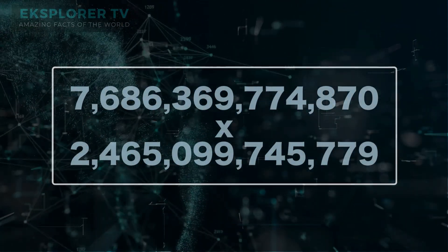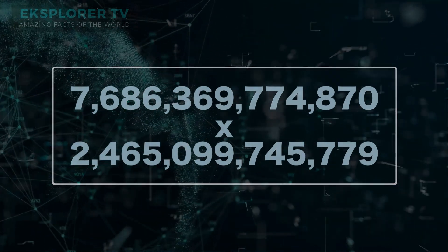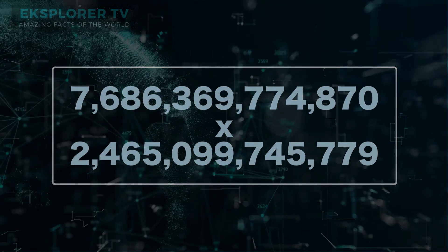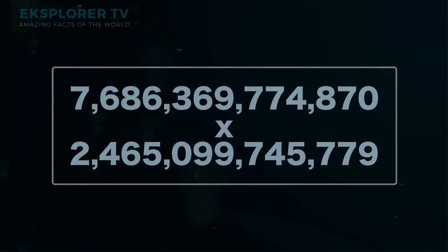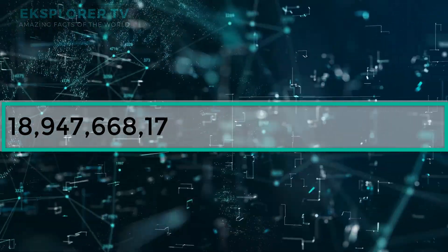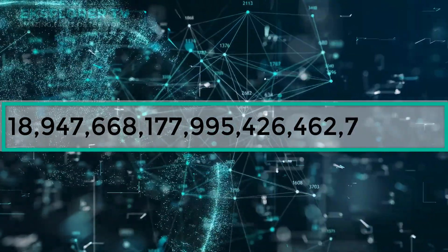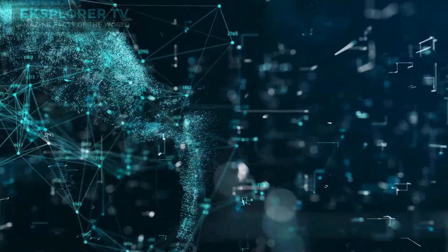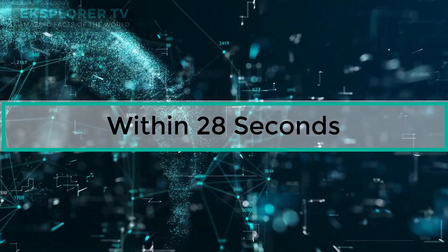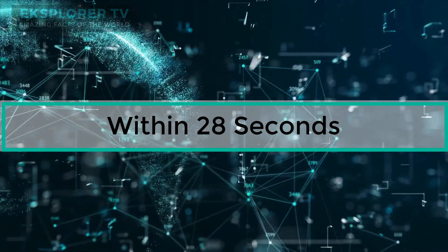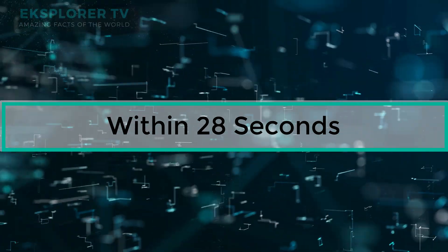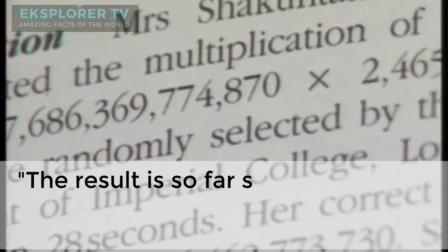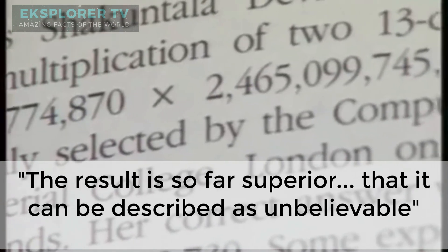Ang isa pang kahangahangang pangyayari ay naganap noong 1977 sa Southern Methodist University. Binigyan niya ng sagot ang 23rd root ng isang 201-digit number sa loob lang ng 50 seconds. Ang kanyang sagot ay 546,372,891, at nakumpirma ito sa pamamagitan ng mga kalkulasyon na ginawa sa US Bureau of Standards ng UNIVAC 1101 computer, na kung saan ang isang espesyal na program ay kailangan isulat upang maisagawa ang malaking pagkalkula. Noong June 18, 1980, ipinamalas niya ang kakayahan sa pagmultiply sa dalawang 13-digit number. Ang mga numerong ito ay random pick ng Department of Computing sa Imperial College of London, at sa loob lang ng 28 seconds niya ito sinagutan gamit ang mental arithmetic. Ang event na ito ay na-record sa 1982 Guinness Book of Records. Sinabi ng writer na si Stephen Smith: 'The result is so far superior to anything previously reported that it can only be described as unbelievable.'